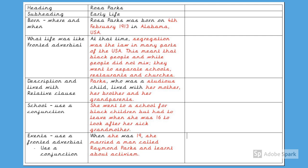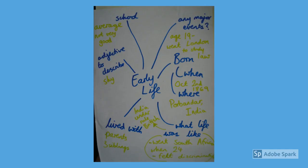Writing that you might like to keep the same, because it will help you with the structure of your sentences and help you include fronted adverbials and relative clauses in the appropriate place, I have left in black. Writing that you need to change because it is a fact that relates to Rosa Parks has been highlighted in red. So the first thing I need to do to create my box up for my own person — I'm doing it on Gandhi — is to look at my mind map.